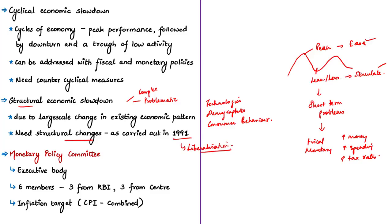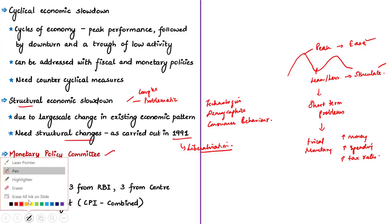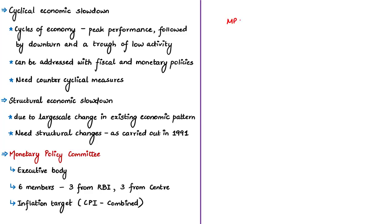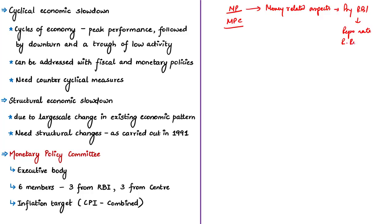Let us discuss some important terminologies from this interview. In the opinion of the RBI governor, the monetary policy committee is working well when it comes to inflation targeting. Monetary policy deals with controlling money-related aspects in an economy; in India this function is carried out by the Reserve Bank of India. Some instruments of monetary policy include bank rates, repo rates, reverse repo rates, cash reserve ratio, and statutory liquidity ratio. The decisions on these instruments are decided by the monetary policy committee.